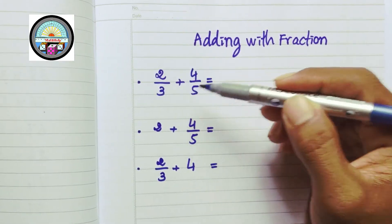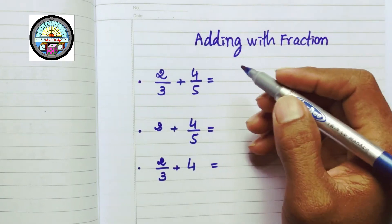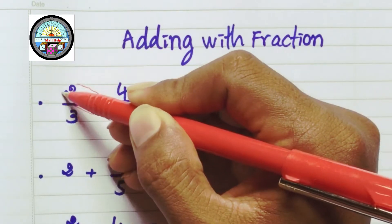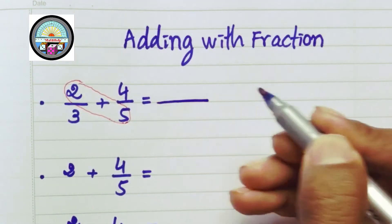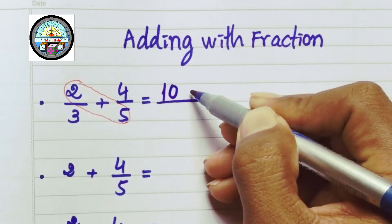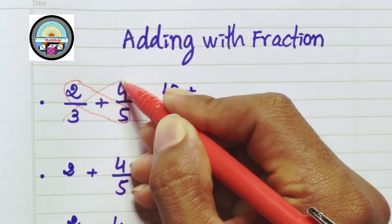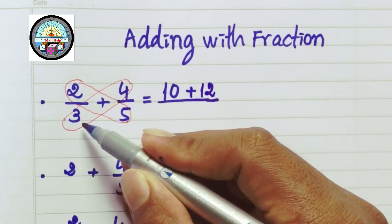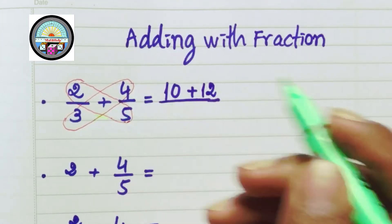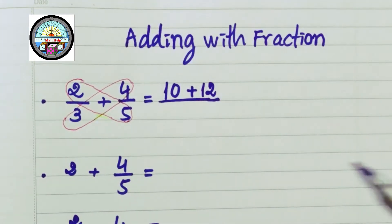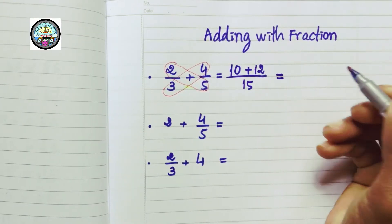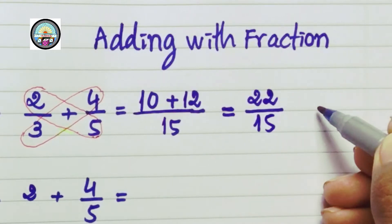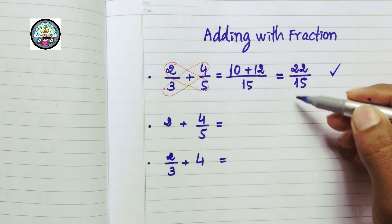So we can do it. 2 times 5 equals 10, plus 3 times 4 equals 12, and 3 times 5 equals 15. That gives us 22 over 15.